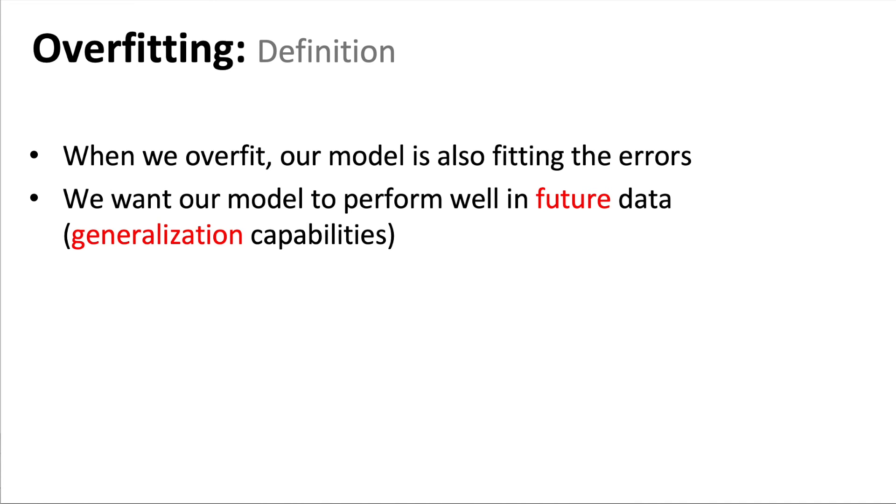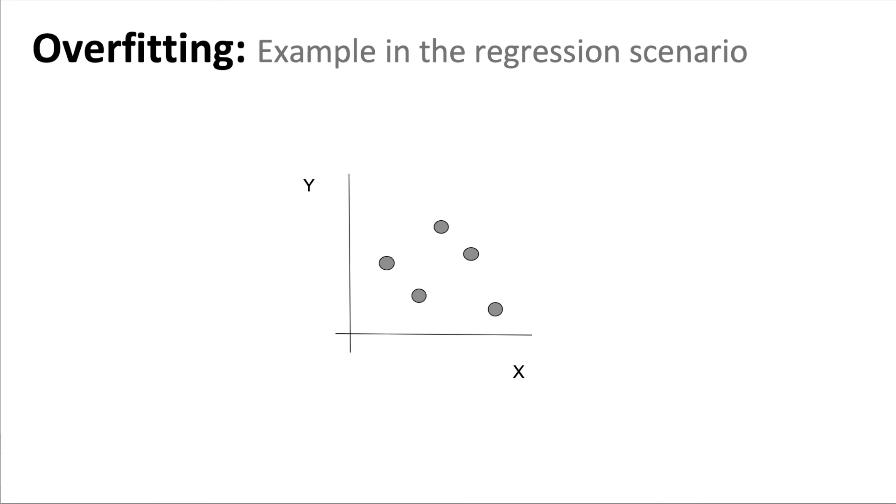In other words, when the model starts seeing new data, it's going to classify it well. How would look the overfitting in the case of the regression scenario?